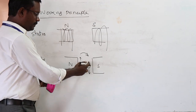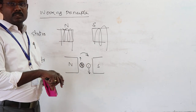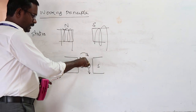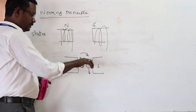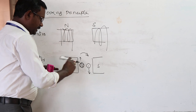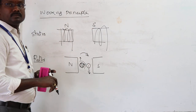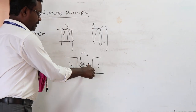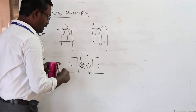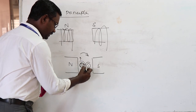Now according to the thumb rule, in the conductor where current is going into the plane, the flux will be produced in one direction. And where current is coming out from the plane, the flux will be produced in the opposite direction.